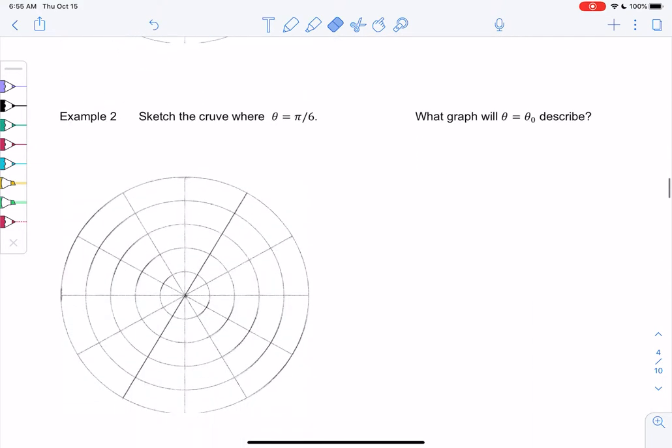Let's look at theta equals a number. Now the radius can be anything. So let's find pi over 6, that would be this angle right here. Any radius works, even decimal radiuses, so it'll be that entire line.